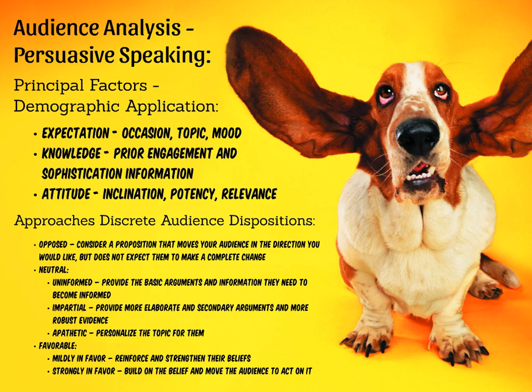Finally, favorable audiences, which we'll lump into the mildly and strongly in favor. Mildly in favor audiences are those whose beliefs you want to reinforce and strengthen. Give them ammunition so that when they become your avatars in their everyday lives, they'll know the kinds of arguments likely to win even complex debates. And then there's the strongly in favor. Since these audiences are probably already aware of even very intricate arguments, these are the individuals you want to build on the beliefs of and spur to action — tell them what to do next: vote for certain candidates, boycott certain products, visit certain charitable websites, etc.